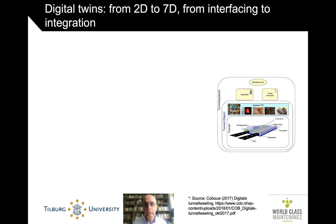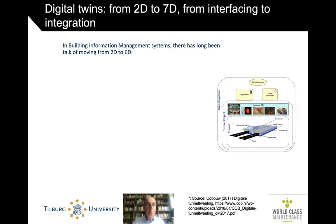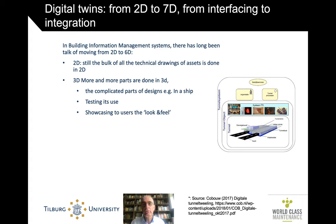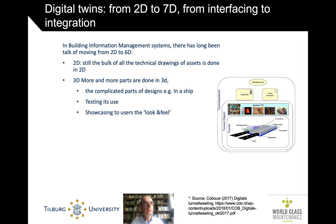The idea of digital twins is that you can add dimensions. Believe it or not, but the bulk of all technical documentation of assets in today's society is still 2D — it's still drawings, like the drawings of your house. You can get it in 3D if you pay extra. But the 3D parts are only those more complicated parts, like if it's in a ship and you have to see where all the piping goes and whether there is still room to walk through. Then you move from 2D to 3D because 2D just gets too limited for the designer.